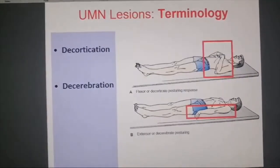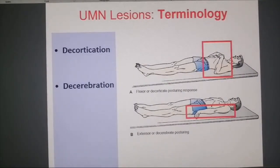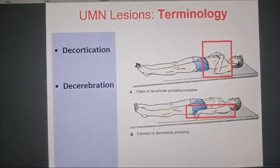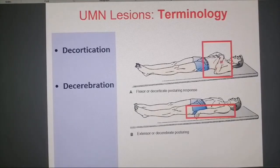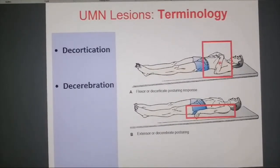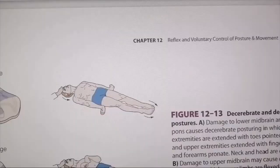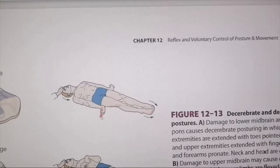We talked about two levels of flexors — distal and proximal. The rubrospinal tract controls the proximal flexors, while the corticospinal tract controls the distal flexors. In decortication, we have the rubrospinal tract intact. When you induce this kind of spasticity by tapping the forehead, it induces an extensor-type rigidity, with the fists pronated and flexed.